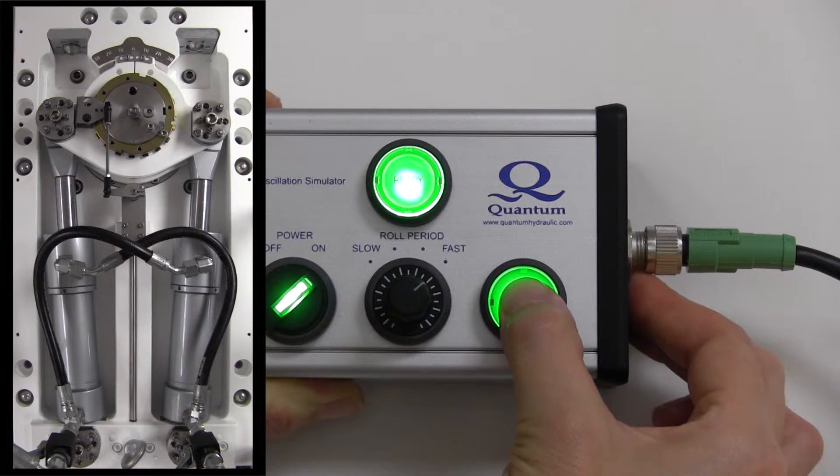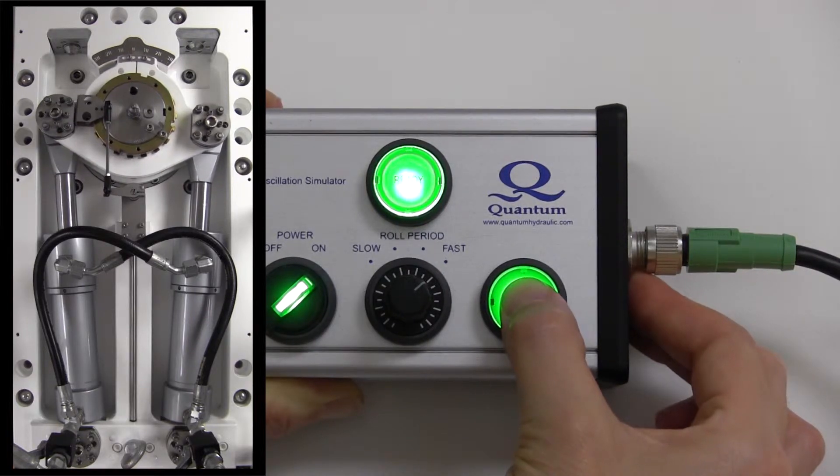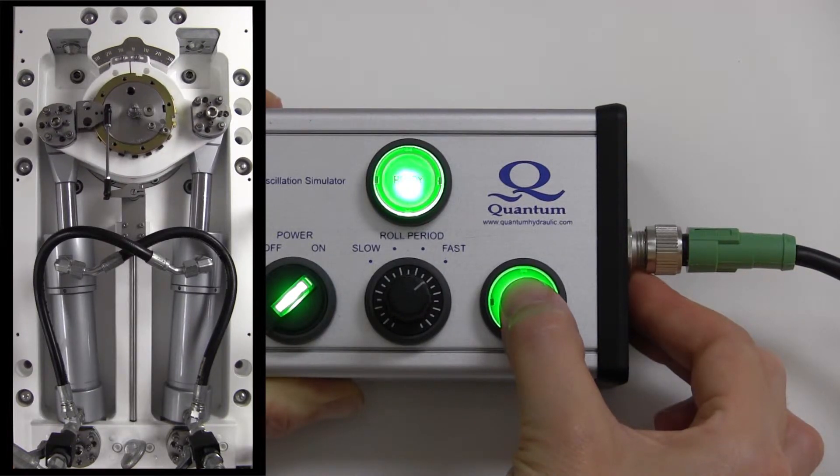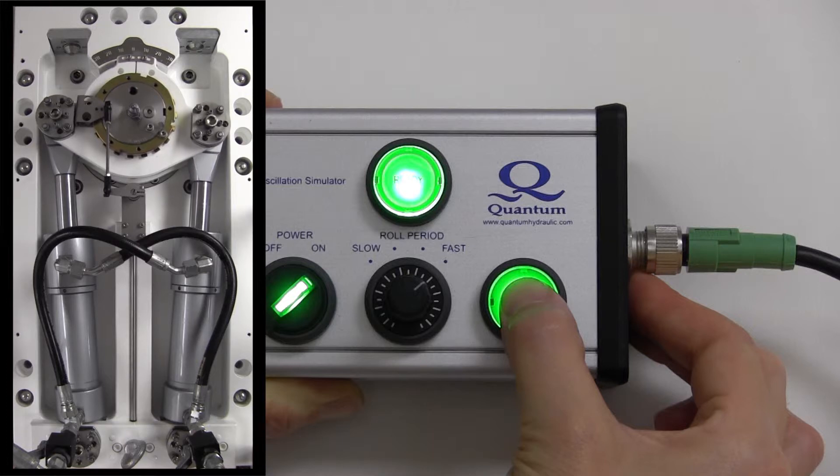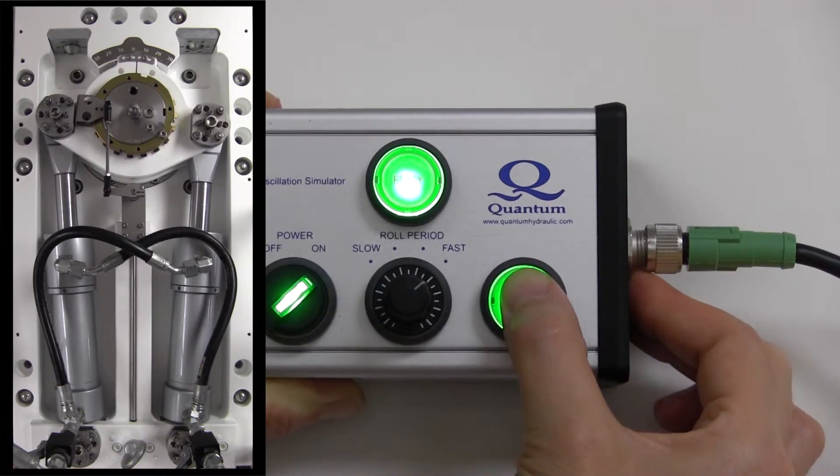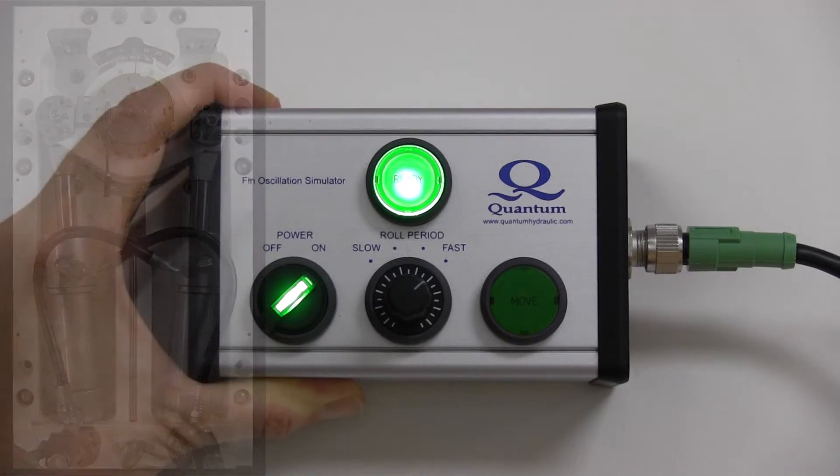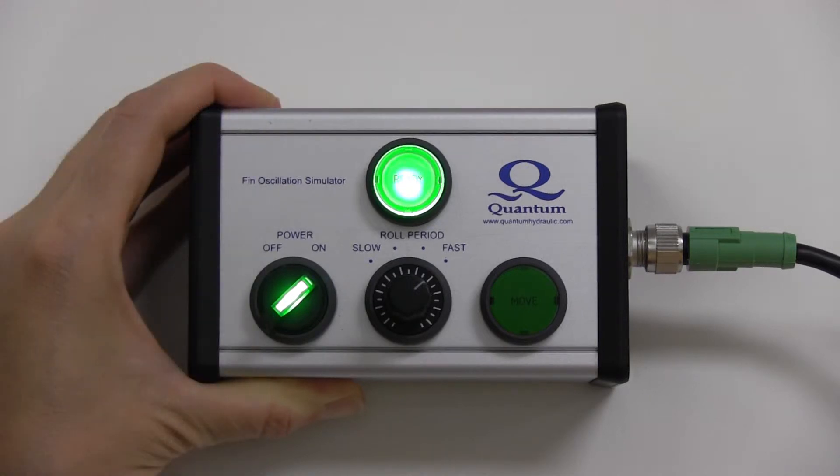The stabilizer only oscillates while the Move button is depressed. Once the Move button is released, the stabilizer unit will return to center and stop.